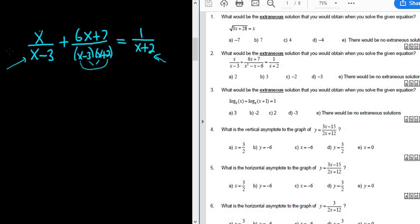So let's multiply everything. To get rid of the x minus 3, we need an x minus 3. And to get rid of the x plus 2, we need an x plus 2. So multiply everything by x minus 3 and x plus 2.